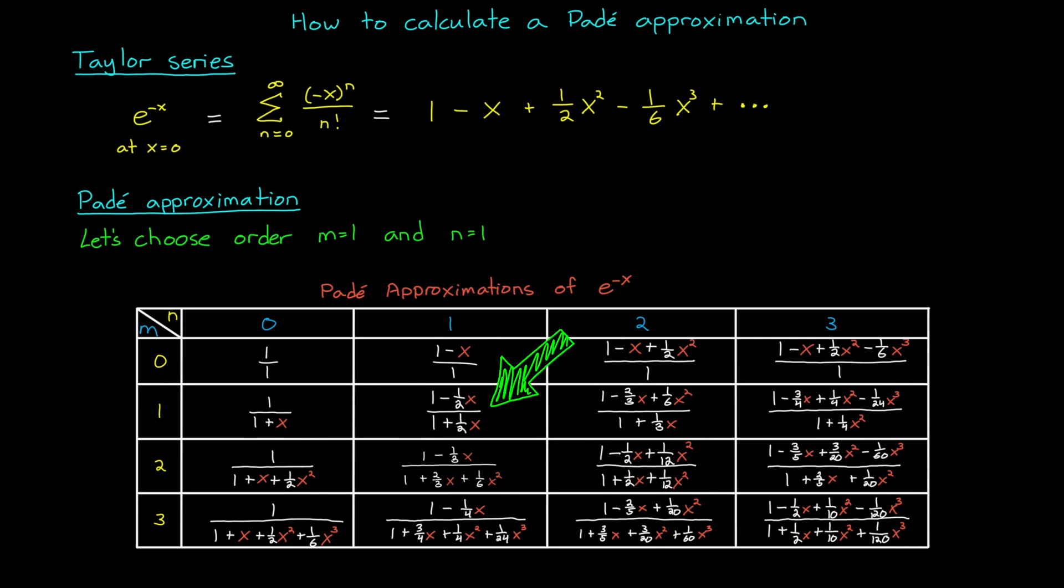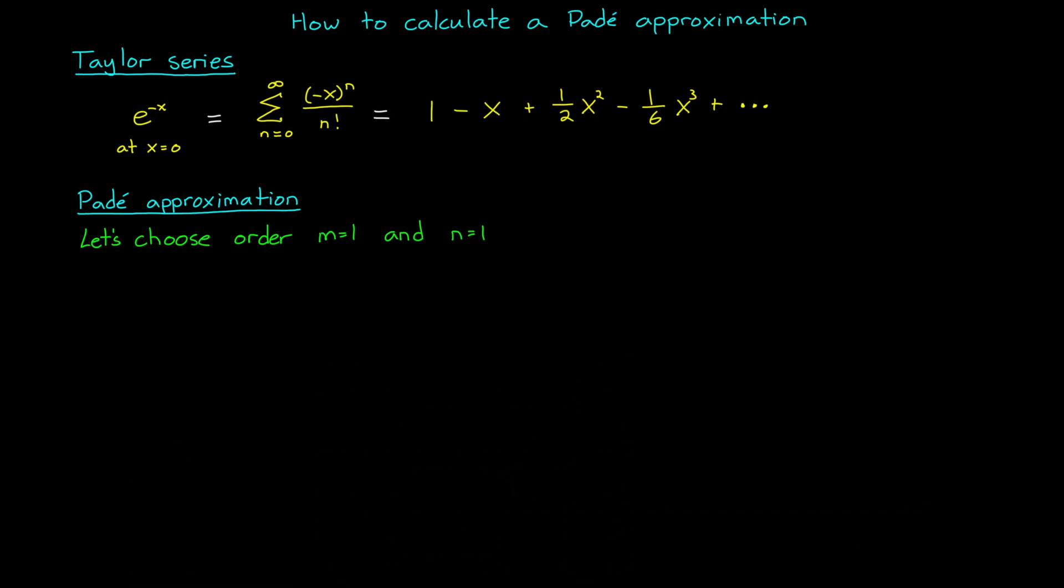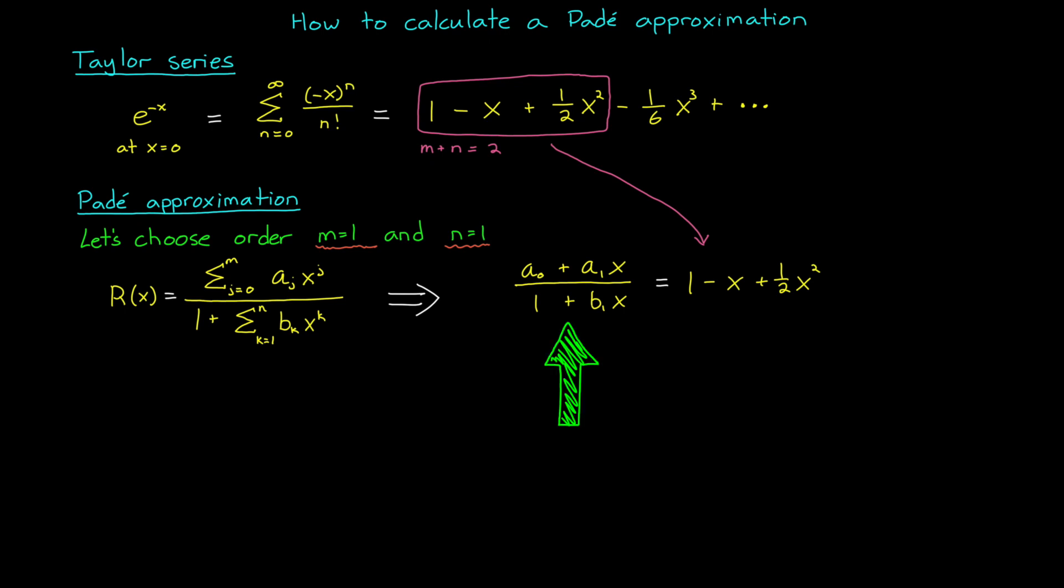Basically we need to pick a numerator order m and a denominator order n. For this example, I'm going to choose a first order for both. A Padé approximation of order m over n is this rational function r of x. And it might look intimidating, but if I expand this for order 1 over 1, we get this much simpler a 0 plus a 1 x divided by 1 plus b 1 x. And now we just need to figure out the coefficients a 0, a 1, and b 1. We do this by equating it to the Taylor polynomial of order m plus n.